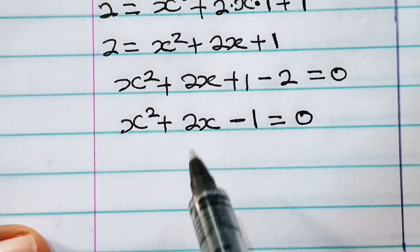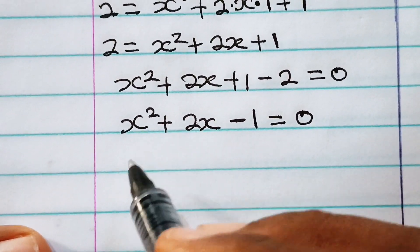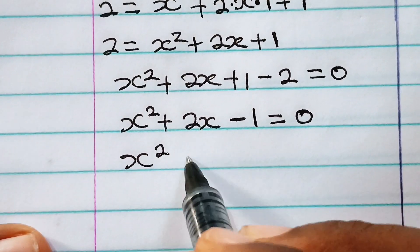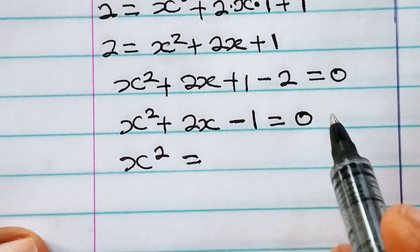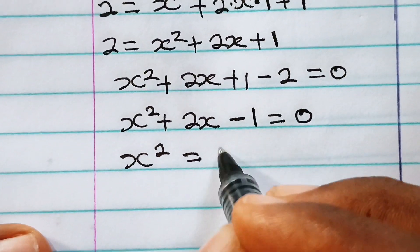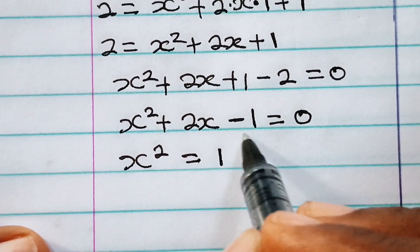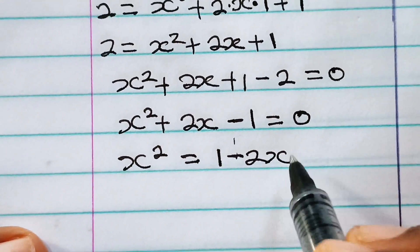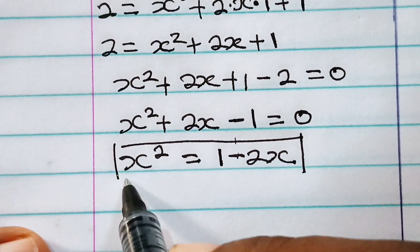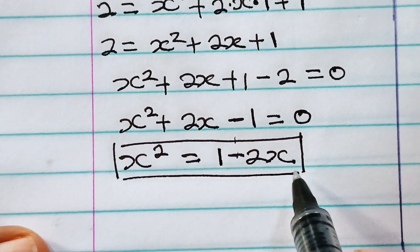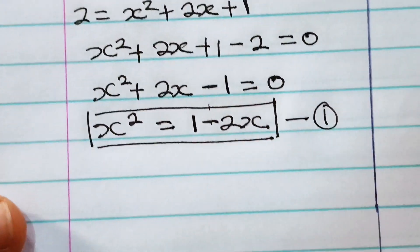Now we have x squared plus 2x plus 1 minus 2, transferring the 2 to the right-hand side, is equal to 0. We have x squared plus 2x minus 1 equals 0. Now let us make x squared the subject of the formula. So x squared is equal to 1 minus 2x. Let's call this equation 1.